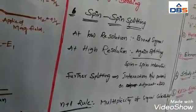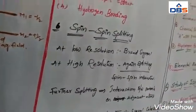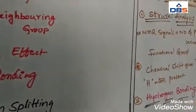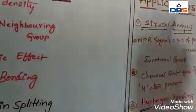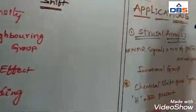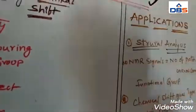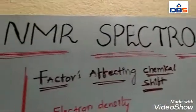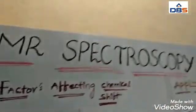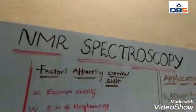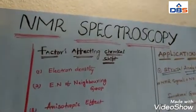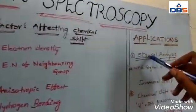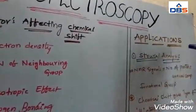And then, the last application to discuss is nothing but: what are the main applications of NMR spectroscopy? The main application of NMR spectroscopy is, first one, structural analysis. By using NMR spectroscopy, you can identify and characterize the structure of organic compounds and the structure of atoms which are present in a molecule.